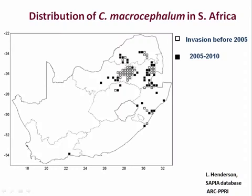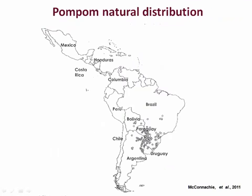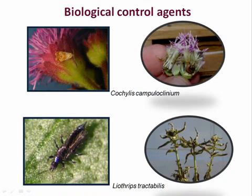This is the distribution map, which goes up to 2010, and I'm sure it has continued to invade new areas. The natural distribution is mainly in South America — mainly Argentina and Brazil, Bolivia, Paraguay and Uruguay — and it also has presence in Central America.